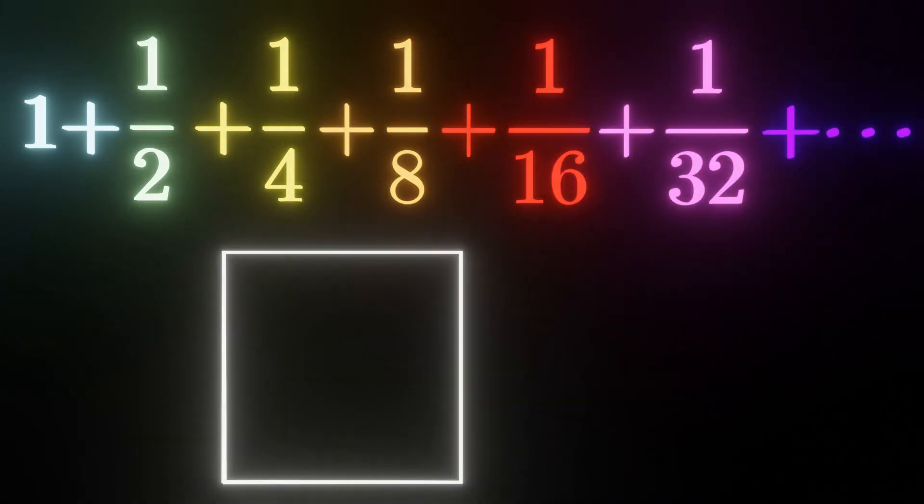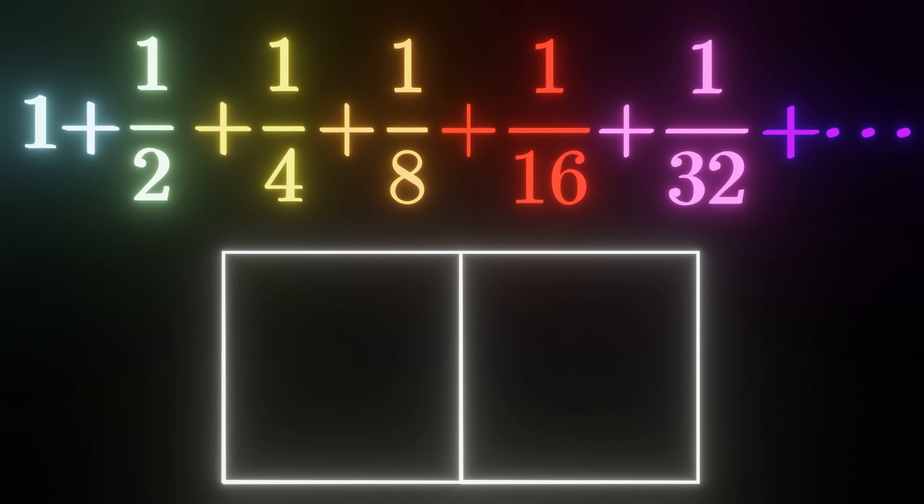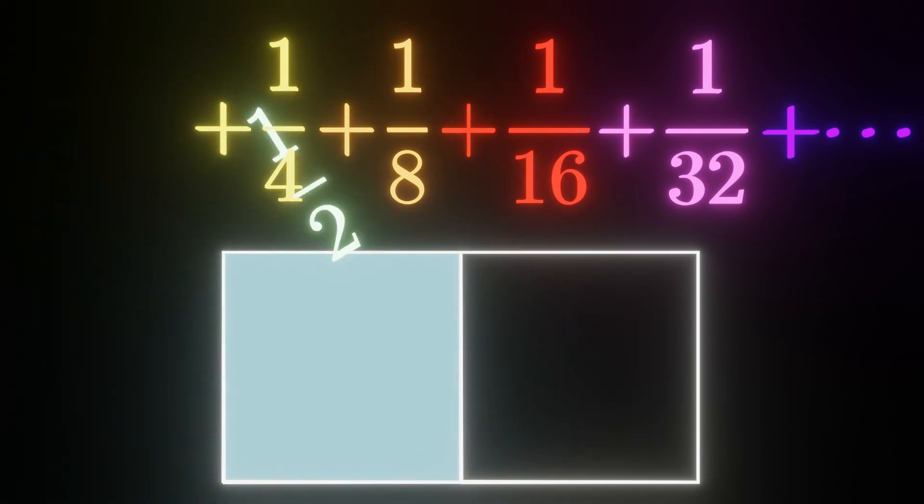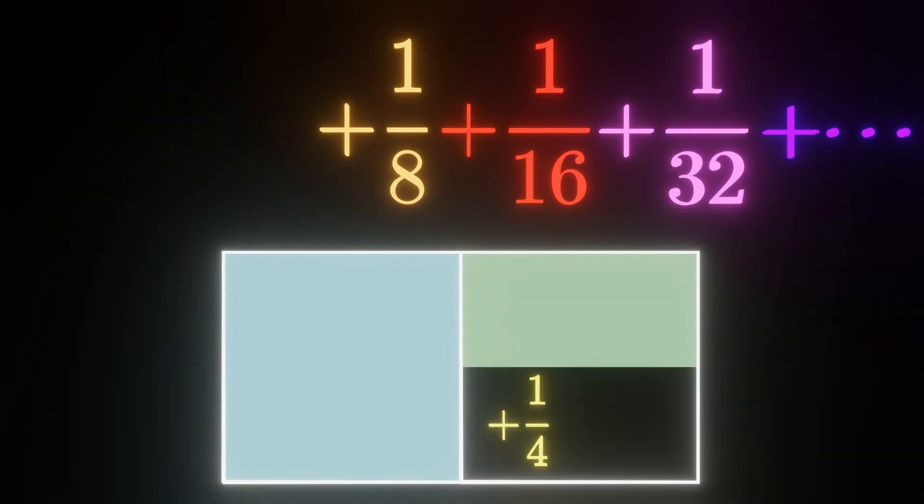We can think of this as the area of two unit squares. We start off with both of them being empty, and for each term we color that much of the area. First, we color the first square, and then half of the second square, and then a quarter, and an eighth, and so on.